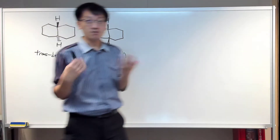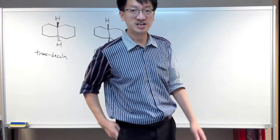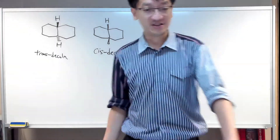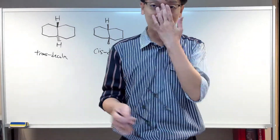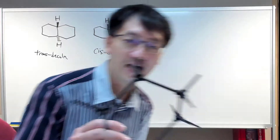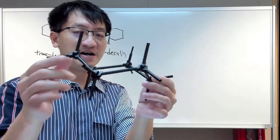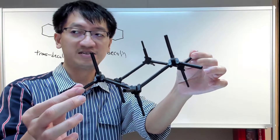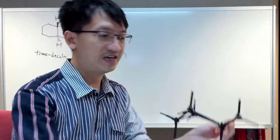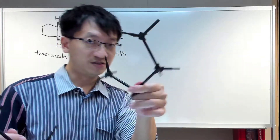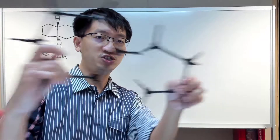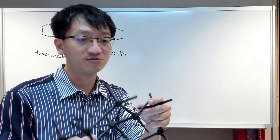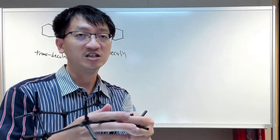Cisdecaline tends to be more challenging compared to transdecaline, so I will attempt to draw transdecaline first because that's the easiest one to draw for assessment purposes. Before that I'm going to use a model to explain. This is the usual chair conformation for a six-membered ring. I'm going to use the remaining four carbons to join them up to give cis or transdecaline — in this case, transdecaline.